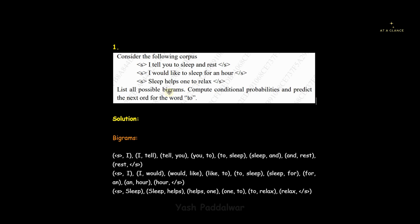First we will have to calculate the bigrams. We are given three sentences. When it comes to bigrams, the word itself tells us that we have to form pairs of two words. Sentence by sentence we need to form pairs of two words. In the first sentence you can see the start-of-sentence tag, and with that tag we have the word 'I'. So the first bigram will be the S-tag and then 'I' — it's like a tuple.